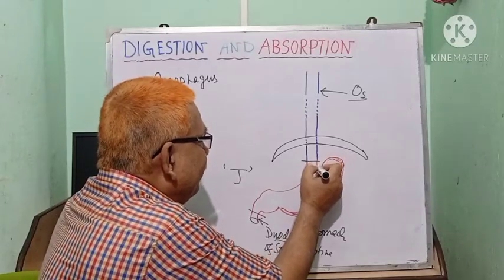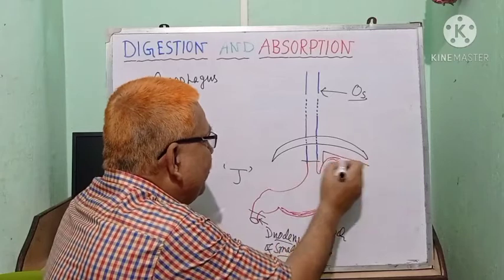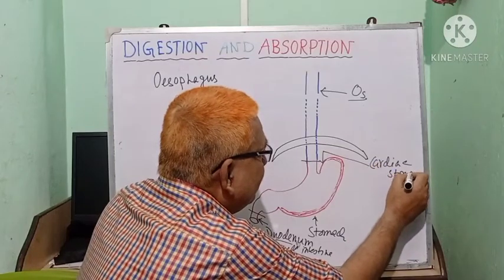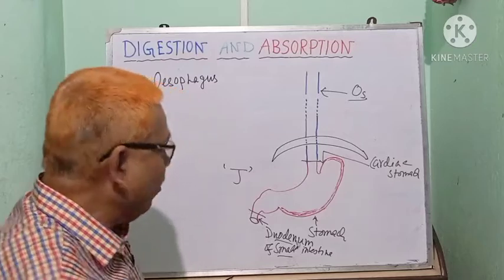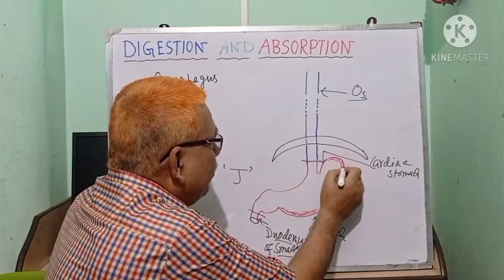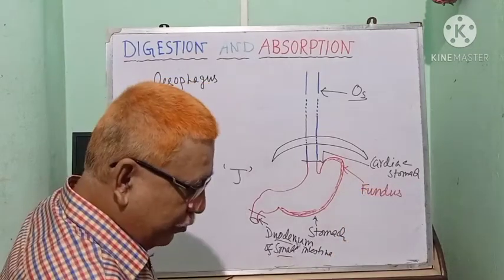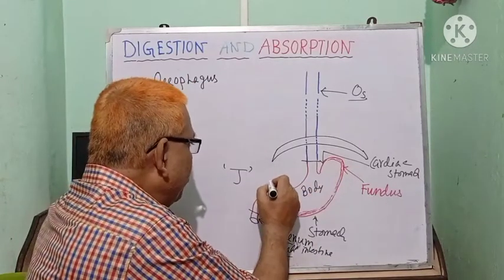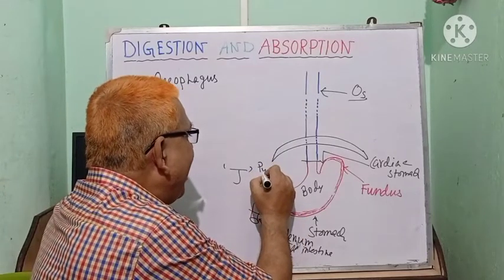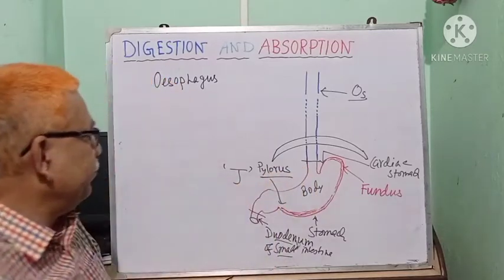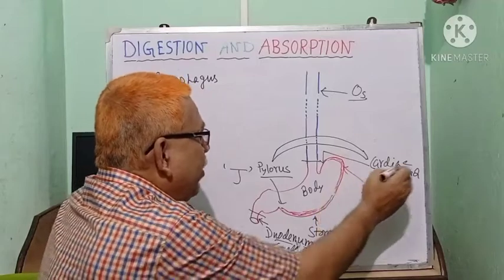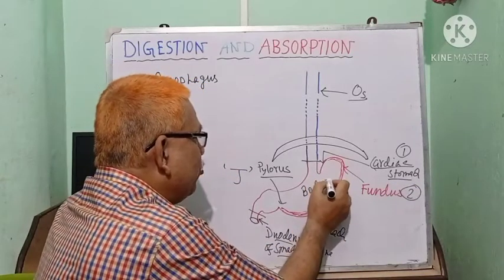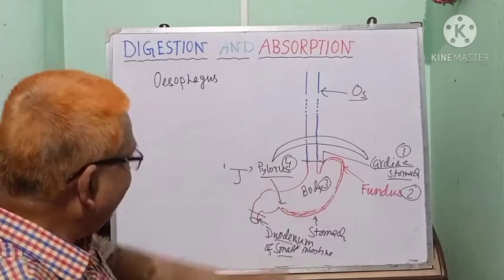Here lies the heart, so this portion of the stomach is called the cardiac stomach. This portion is called the fundus of the stomach. This portion is called the body. And this portion is called the pylorus. So the stomach is divided into four parts: cardiac stomach, fundus, body, and pylorus.